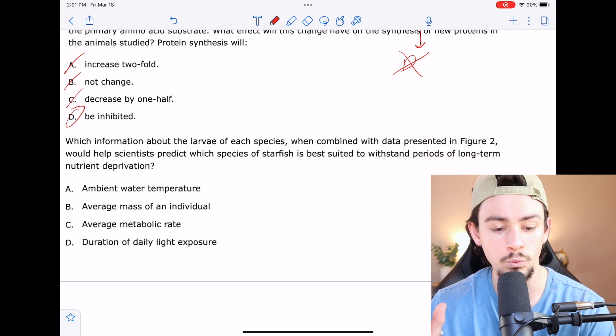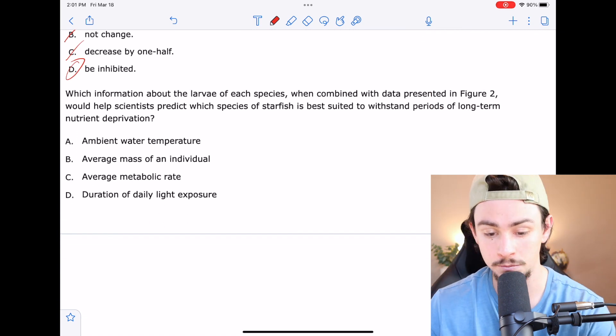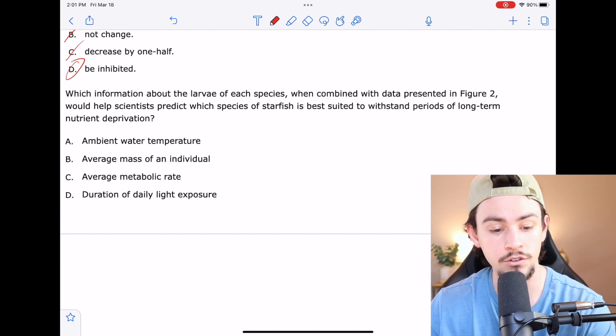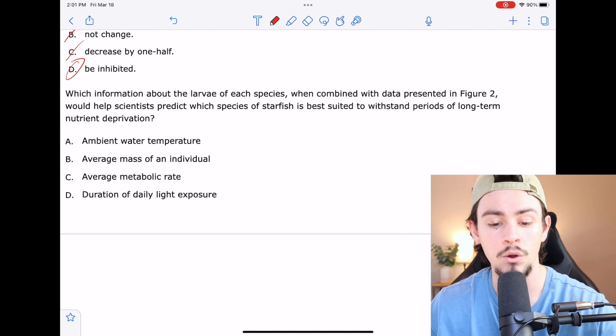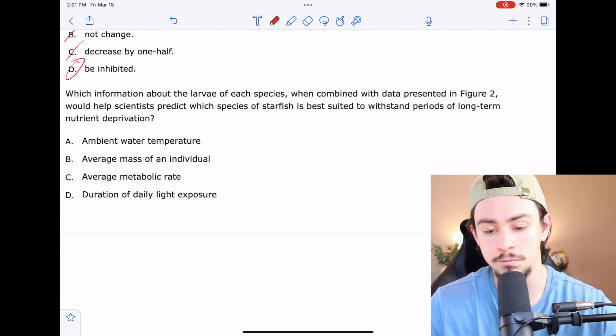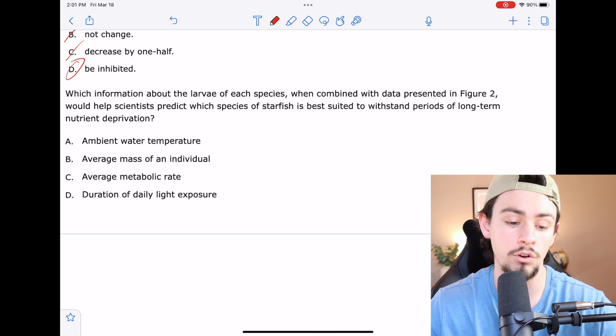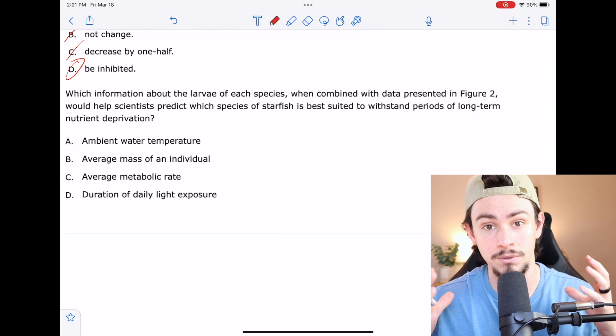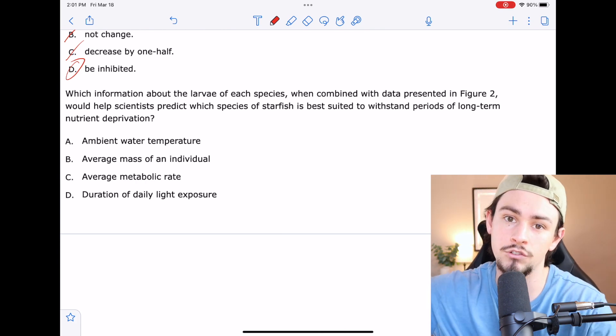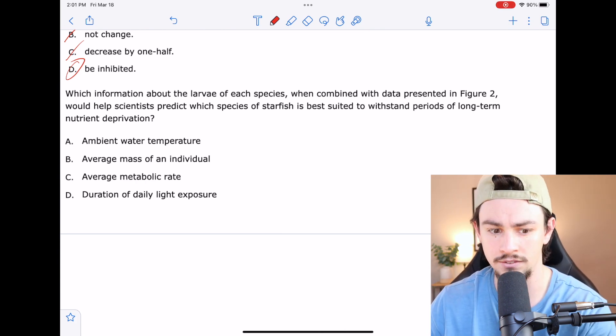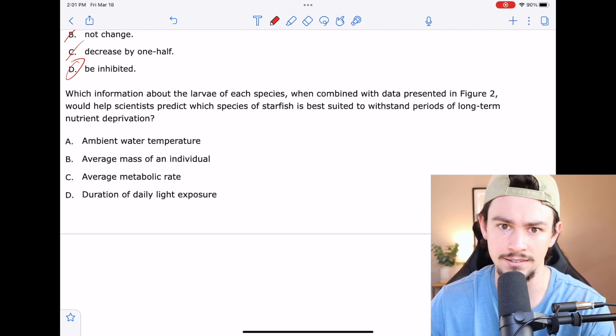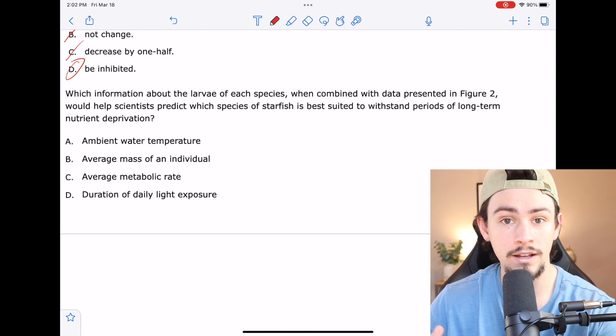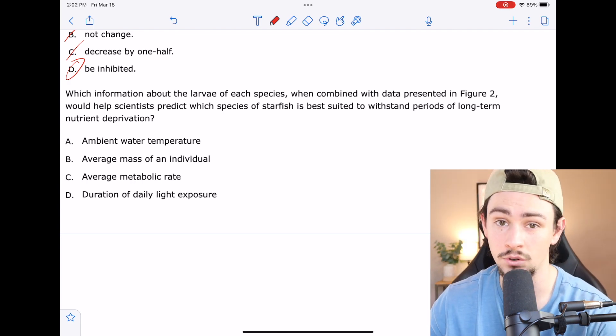And this very last one says, which information about the larvae of each species when combined with the data presented in figure two would help scientists predict which species of starfish is best suited to withstand periods of long-term nutrient deprivation. So they're wanting us to take the knowledge that we've been given in this passage and kind of extrapolate it onto future hypotheses and things like that. Very science-y stuff. But the real question is, what else would we need to intuit long-term survival?